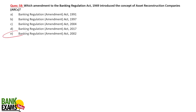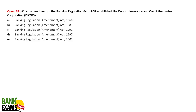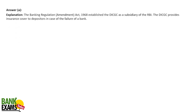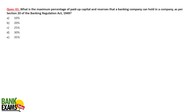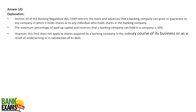The concept of Asset Reconstruction Company came into light with the Banking Regulation Act Amendment Act 2002. DICGC deposit insurance of up to five lakh rupees came into picture in 1968. The provision of priority sector lending for banks came in 1983. Regarding the maximum percentage of paid-up capital and reserves a banking company can hold in another company under Section 20 — it is 30%.